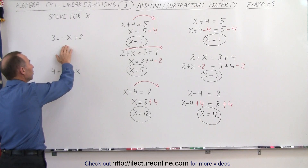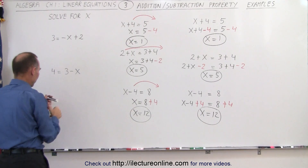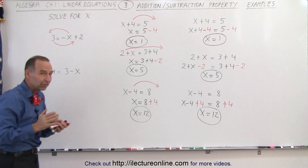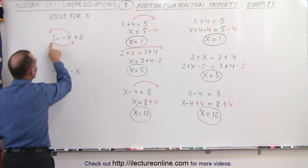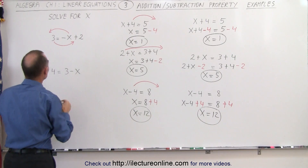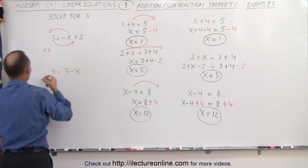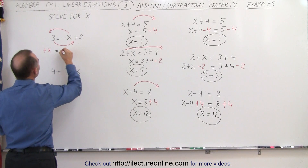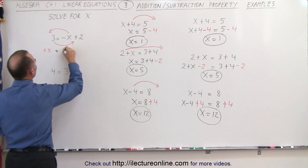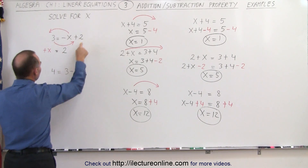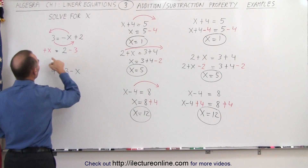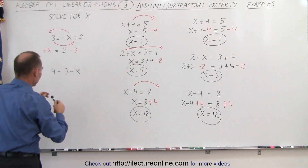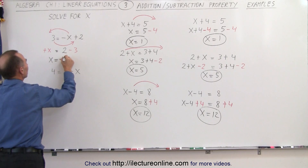We're going to apply that over here. Notice we want the x on the left side and the 3 on the right side. I'm going to move the x to the left, and I'm going to move the 3 to the right. In both cases the sign will change — this was a negative x, it'll become a positive x; this was a positive 3, it will become a negative 3. So this becomes plus x on the left side, equal to 2 minus 3. We can simplify that by writing x is equal to 2 minus 3, which is minus 1.